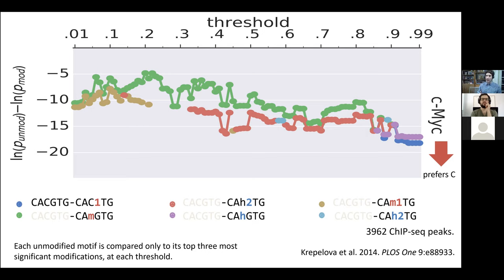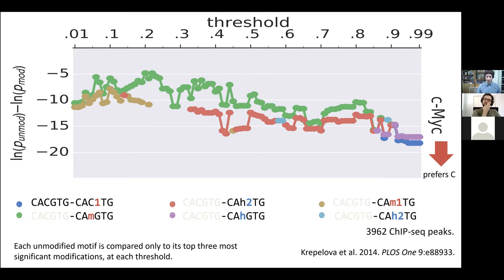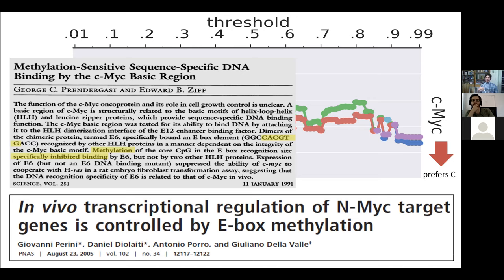This was interesting because it matched well with data from the literature. In 1991, a Science paper was the first to identify a sequence-specific transcription factor with a methylation preference using painstaking in vitro experiments. In 2005, genomic experiments confirmed the same in vivo. Now in this decade we can do this without experiments at all, just by downloading data from BLUEPRINT and ENCODE and using our software.